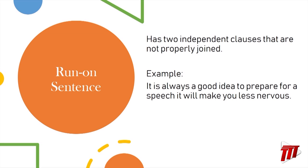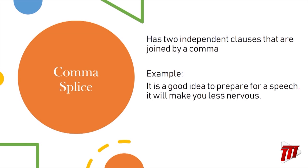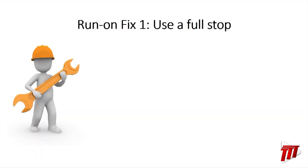We have our example from the previous lesson: "It is always a good idea to prepare for a speech it will make you less nervous." You were also taught that a comma splice has two independent clauses joined by a comma — such as "It is a good idea to prepare for a speech, it will make you less nervous." Commas are not strong enough to separate two independent clauses. In the previous lesson, you learned that the easiest way to fix a run-on sentence is by using a full stop.